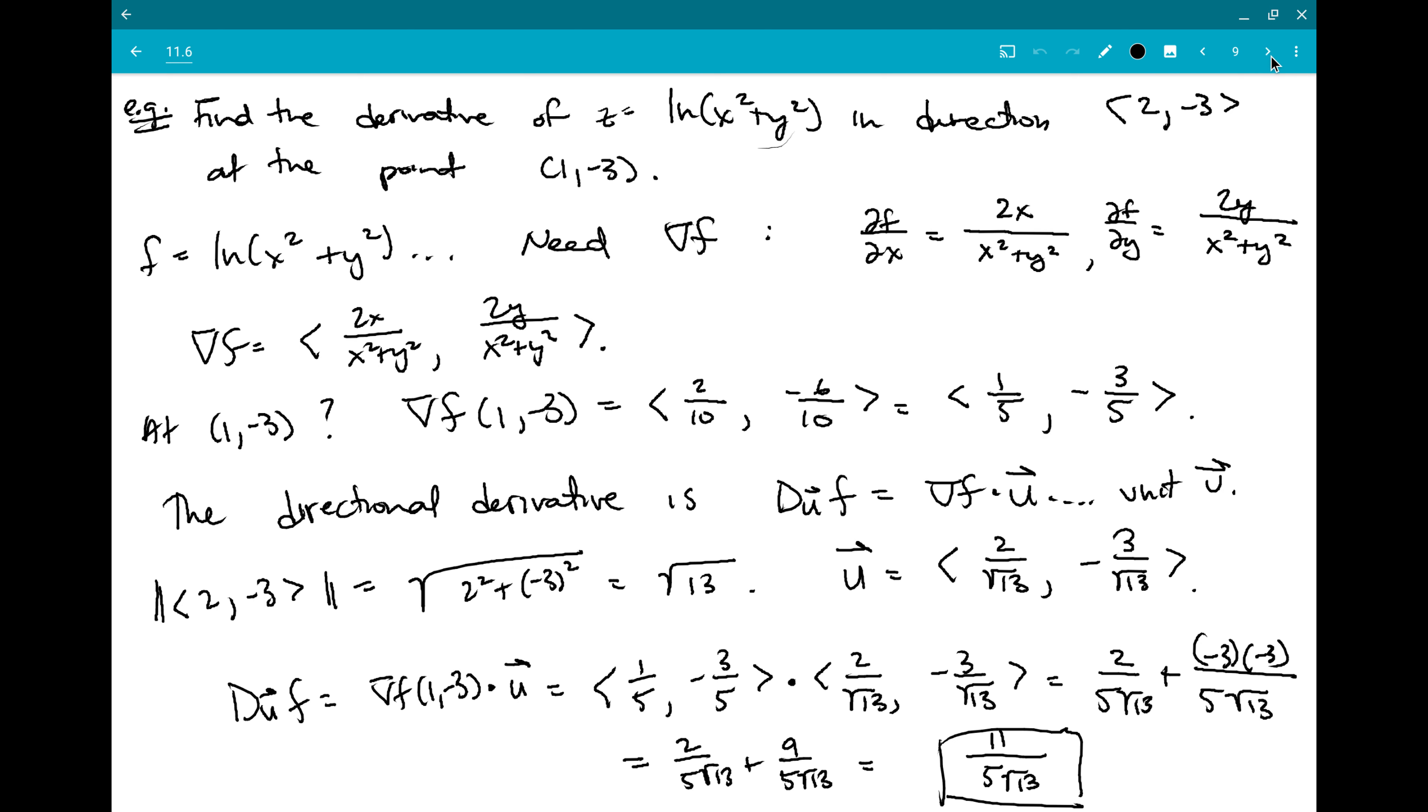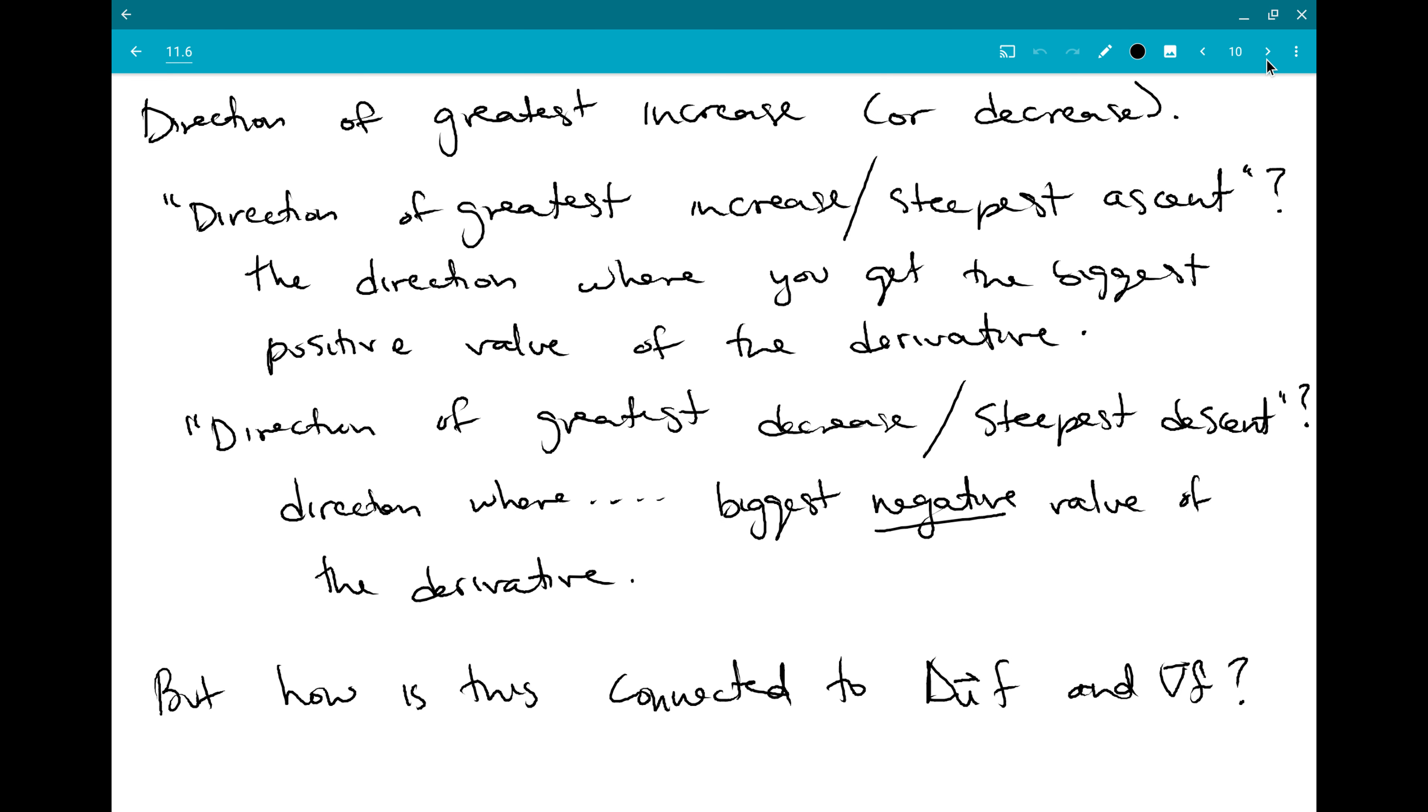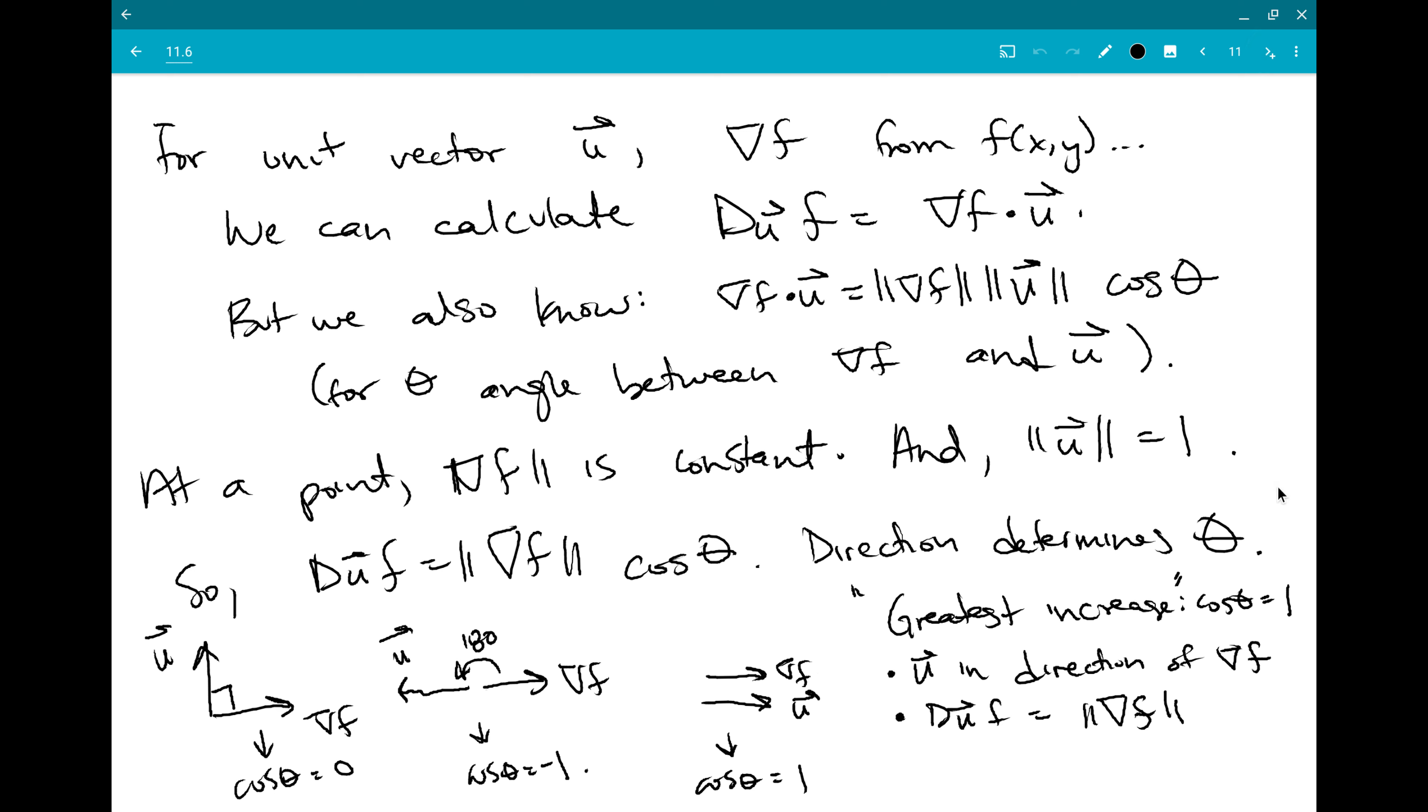So, the value of the directional derivative, when you go in the direction of the gradient, is as high as it ever will be, and it's just the magnitude of the gradient.